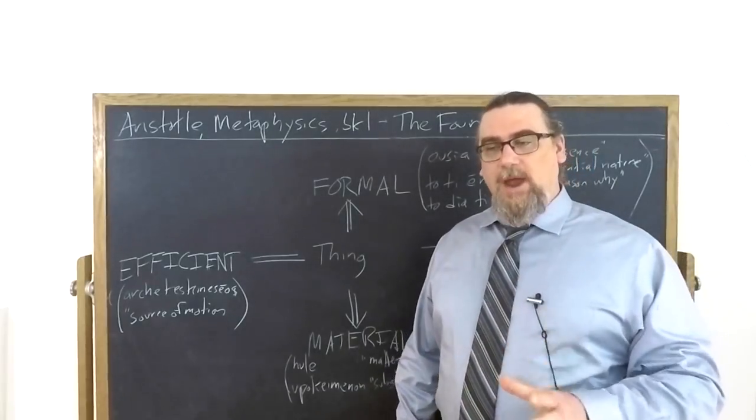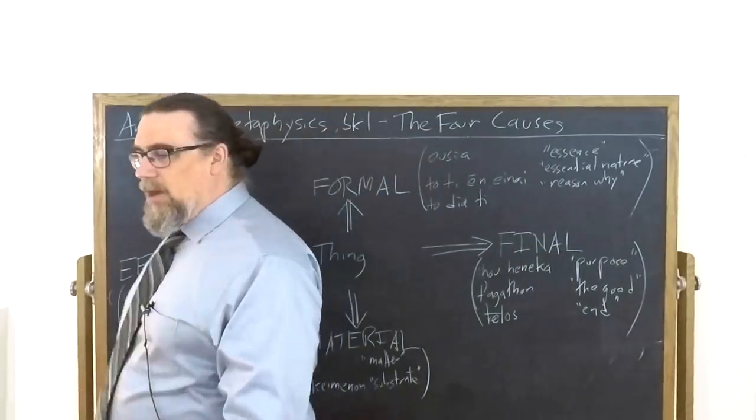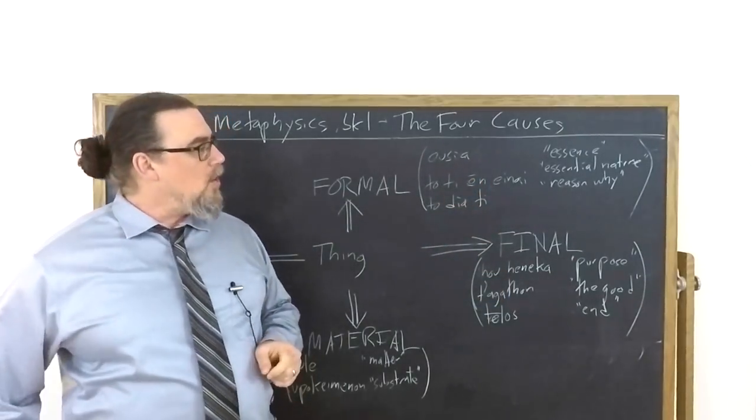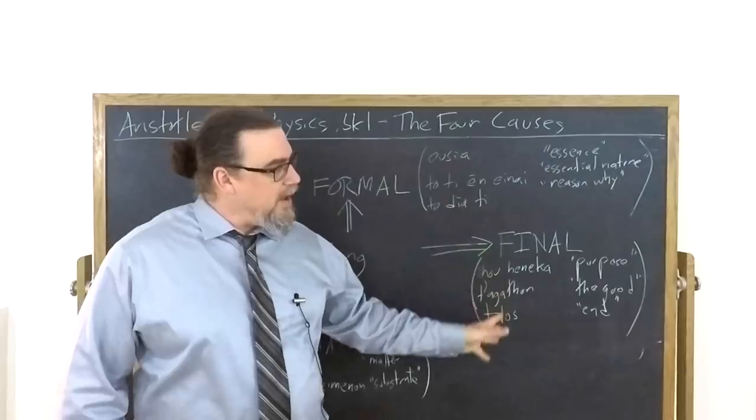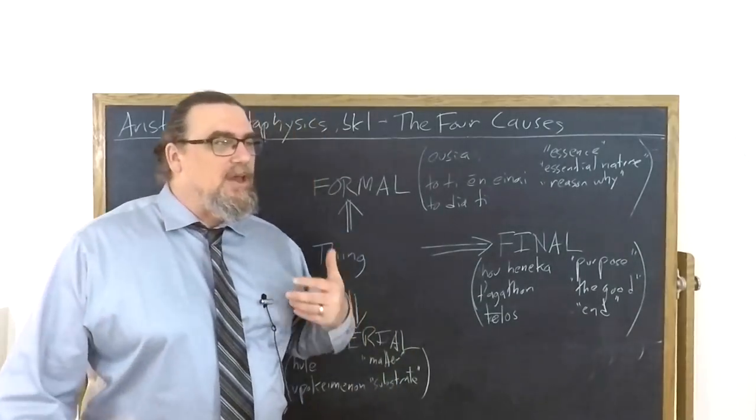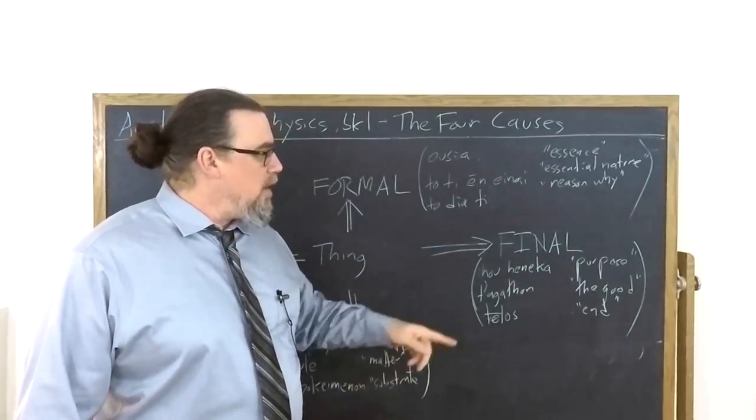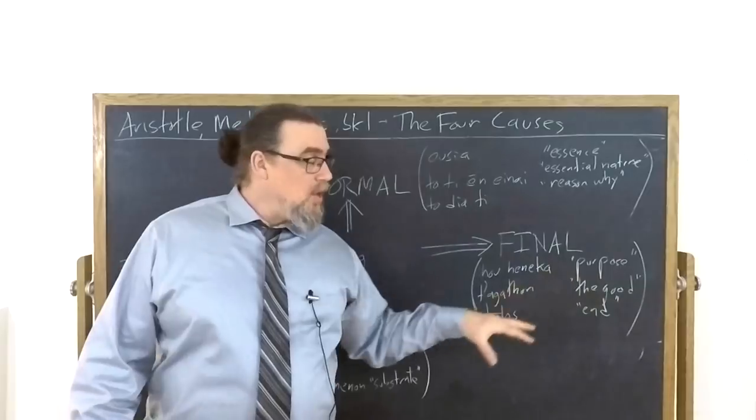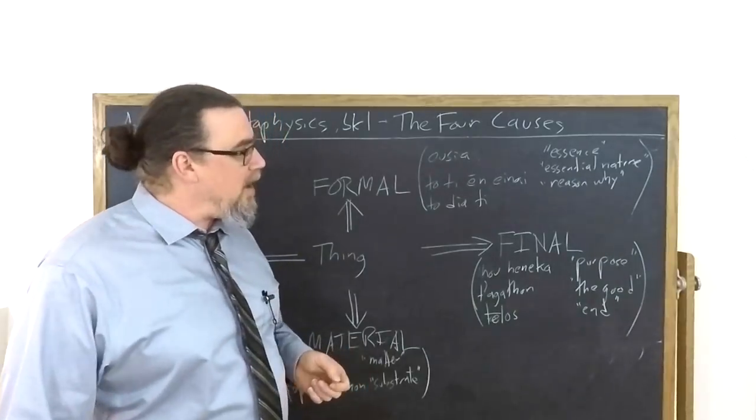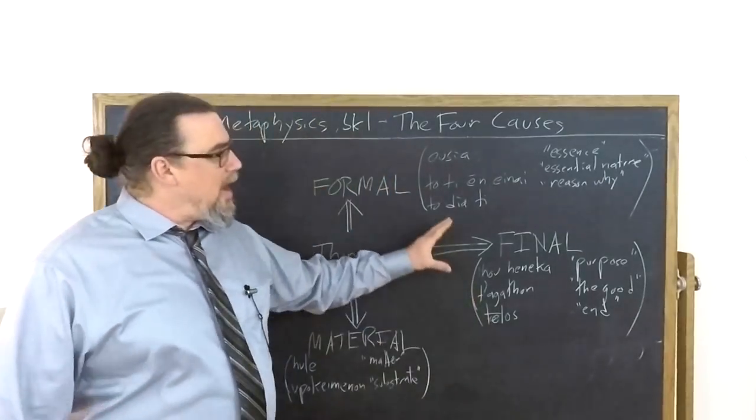One of Aristotle's great contributions to metaphysics, in his view, is noting that there's another kind of cause. And he calls this a final cause. This he labels in a number of different ways. He calls it hou heneka, which we can translate as purpose - literally, that on account of which, or that because of which, or for which. Ta agathon, the good. Or telos, the word we get teleology from, which means end or purpose or goal.